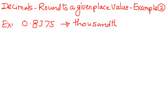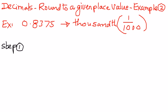So what is the thousandth place? It is 1 over 1,000. Let us write this down and explain this in these different steps. Step number 1: write the given number down the way it is given to us — 0.8375.